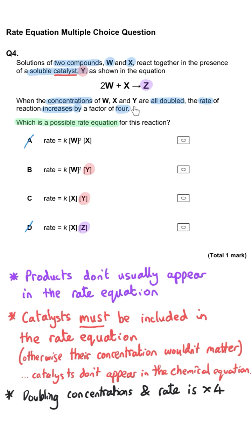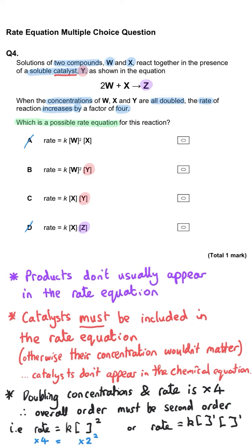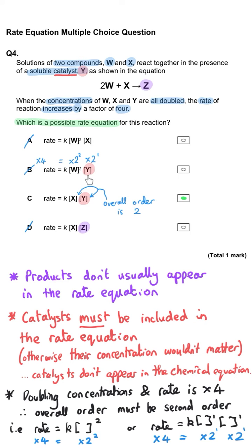Doubling all concentrations and getting a rate factor of 4 tells us the overall order is second. Choosing between B and C, the correct answer is C because it has two first order chemicals — doubling each doubles the rate, giving a factor of four overall. B is wrong because doubling w alone would quadruple the rate, and then doubling y doubles it again, giving a factor of 8. So C is correct.